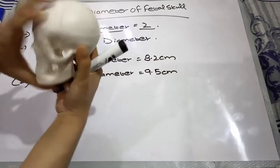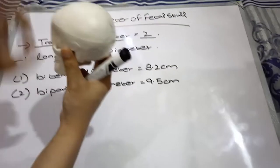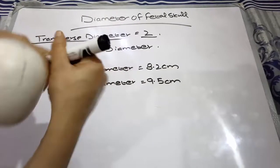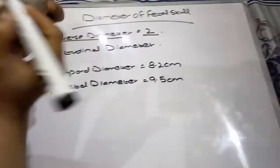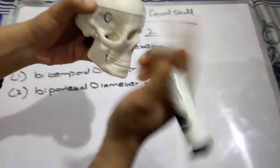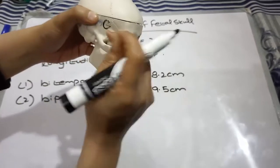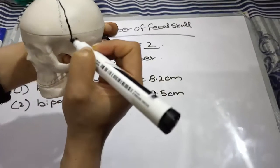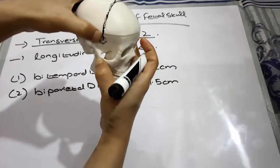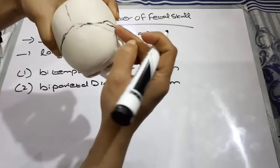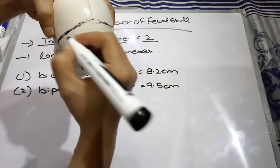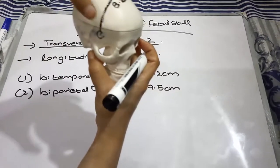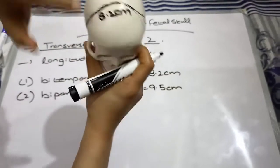The fetal skull comprises two transverse diameters and six longitudinal diameters. For the transverse diameters, we have the temporal bone lying side by side — the right and the left. The region between the right and left temporal bone forms the bi-temporal diameter, which is transverse in nature and measures 8.2 centimeters.